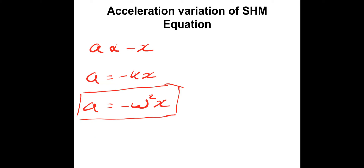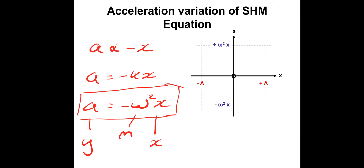And we can plot this on a straight line graph. If we plot acceleration on the y-axis and displacement on the x-axis, the −ω² is the gradient. So we have a graph with a negative gradient that passes through the origin. That comes up quite often on examination-style questions — they'll give you a blank axis and ask you to sketch the graph.